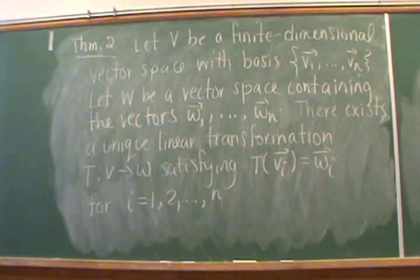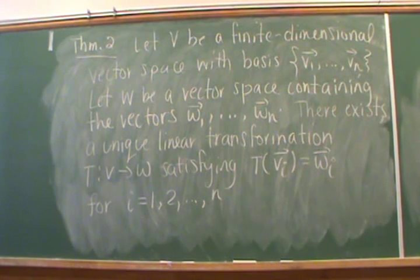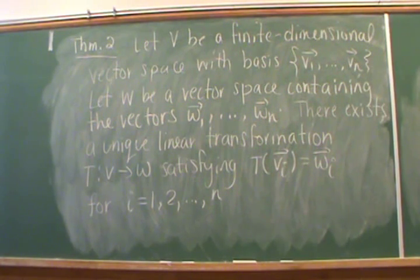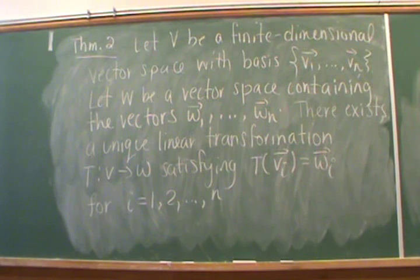Here is the second theorem. If vector space V is finite dimensional with basis v1 through vn, and W is a vector space containing vectors w1 through wn, then theorem two says there exists a unique linear transformation from V to W satisfying T(vi) equals wi for i from 1 to n. Theorem two is nice because it guarantees the transformation not only exists but is unique. We won't prove theorem two as it's not required for our course, but we will utilize it a few times down the road.